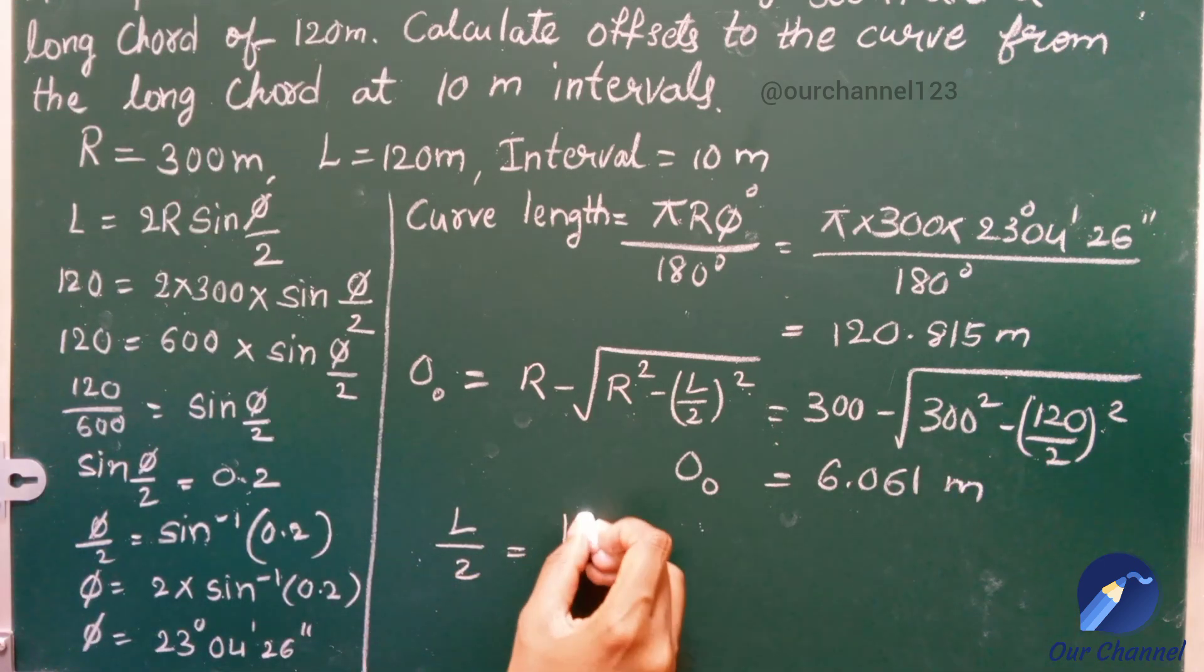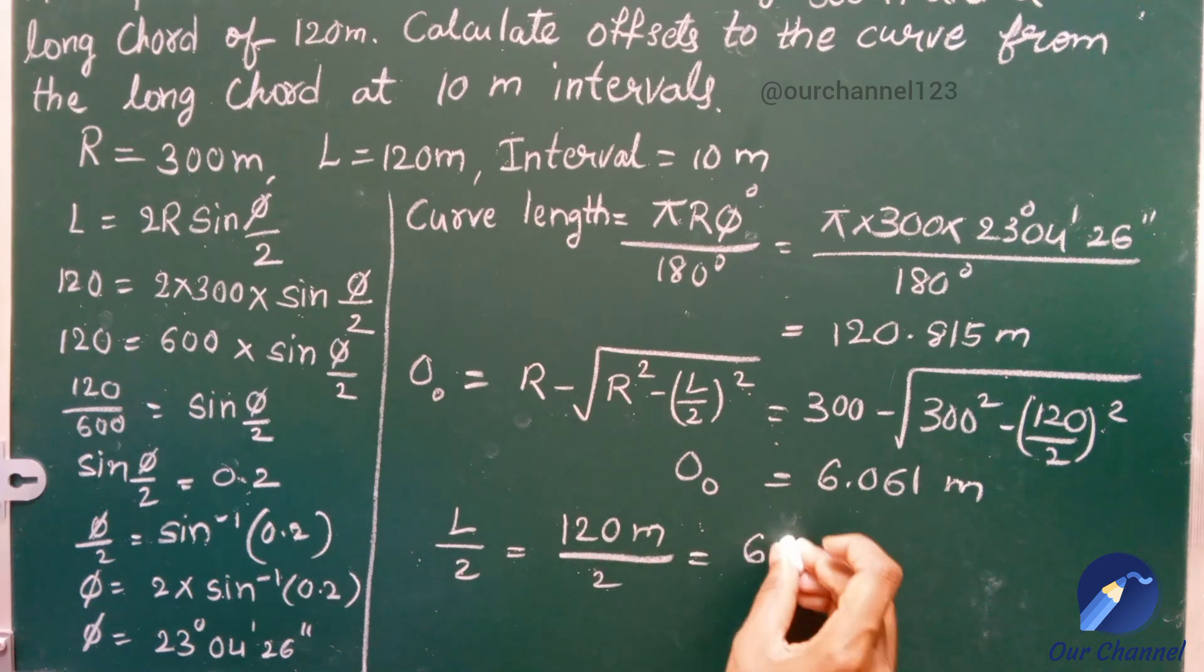Divide the long chord into 2 equal parts. That is 120 meters by 2 equal to 60 meters.